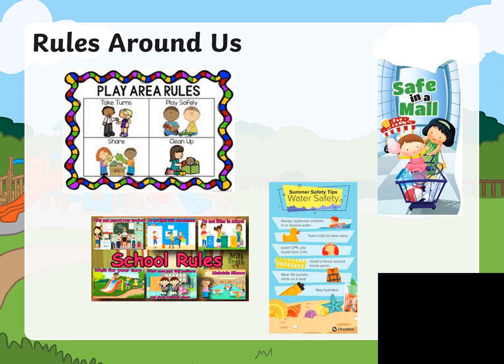Now let's discuss rules around us — rules that we can follow in different places in our community. Play area rules: there are always rules when we go to the playground or to the garden in our neighborhood to play with our friends. We always have to take care, take turns, share, clean up after we are done playing, and always play safely.